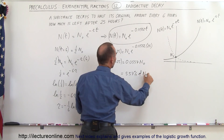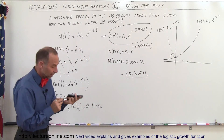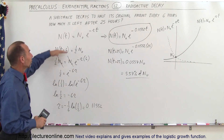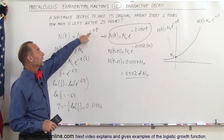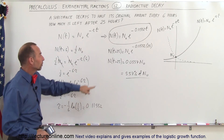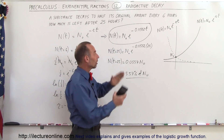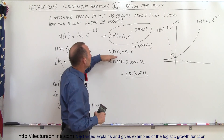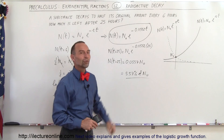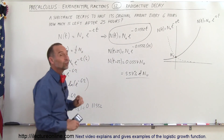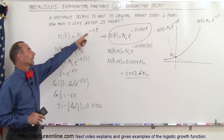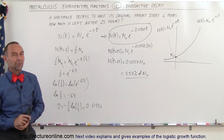That means approximately 5.57% of the original amount remains after 25 hours. To summarize: we use the general exponential decay equation, use the given half-life information to find r, plug r back into the equation, then substitute t equals 25 to calculate the amount left. The exponential decay function is the same as the growth function but with a negative exponent instead of a positive one.